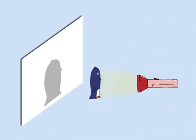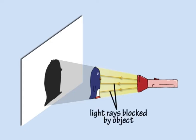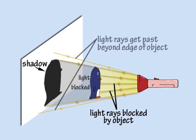Let's shine a torch on an object placed in front of a white screen. The light travels in straight lines from the torch to the object, but it can't get through the object, so a dark shadow is cast onto the screen, showing the light has been blocked. Beyond the edge of the object, light can get past, so the shape of the shadow is similar to the outline of the object.